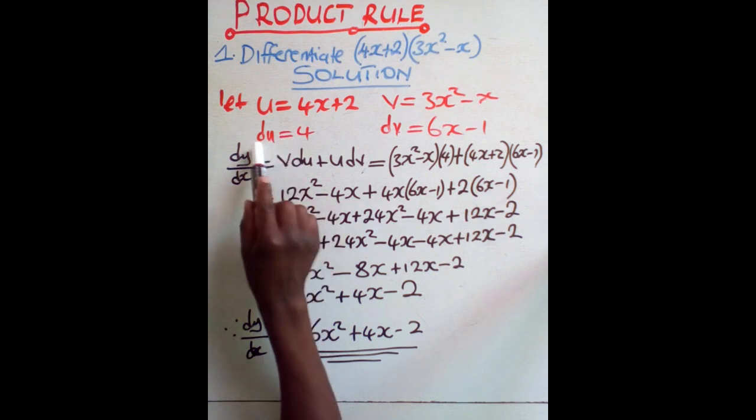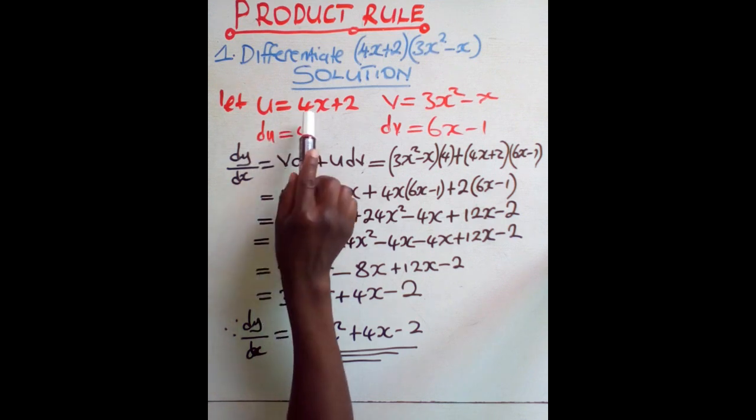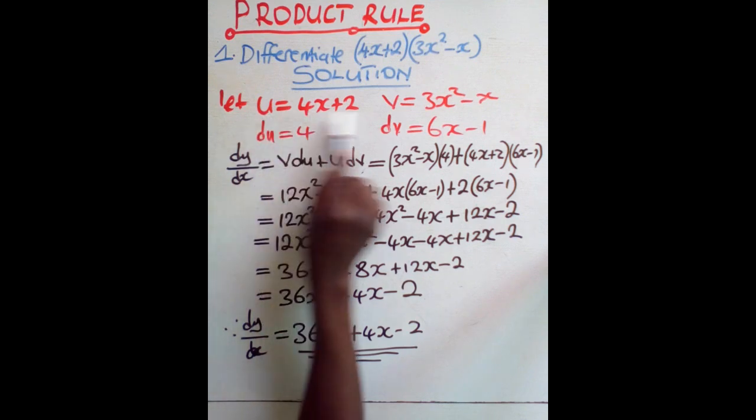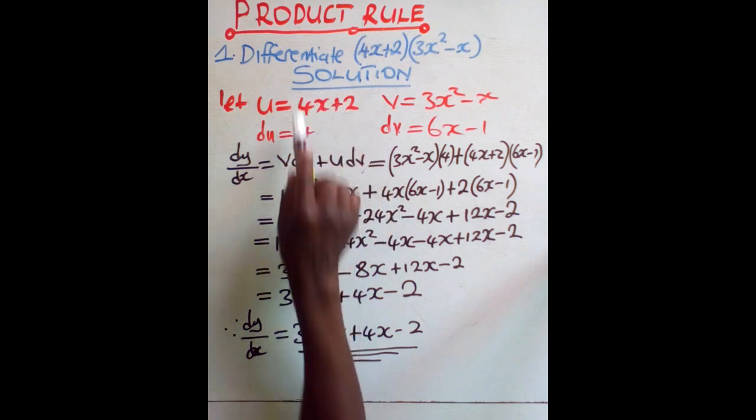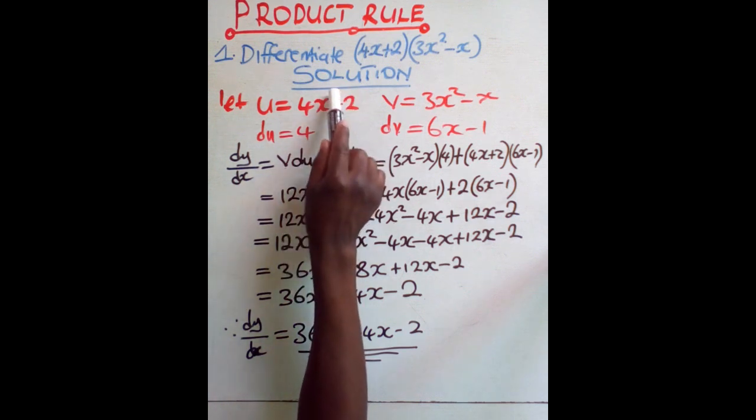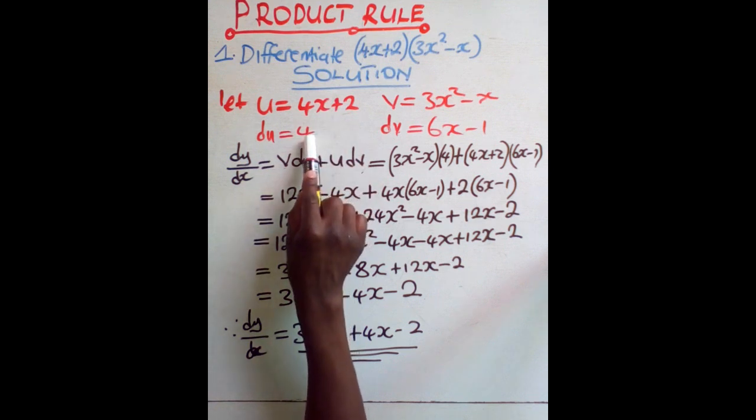So instead of writing du dx, because of space, I just said du, meaning differentiating u with respect to x. Remember, when you differentiate 4x plus 2, this is power 1. 1 times 4 will give you 4. 1 minus 1 will give you power 0, meaning this x will disappear. So that's why we do not have x there.